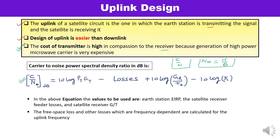The value being calculated is based on certain parameters. First is EIRP — effective isotropic radiated power. Second is the satellite receiver feeder losses and satellite G/T ratio, also known as the figure of merit. Third are the free space loss and other frequency-dependent losses, which can be calculated for the uplink frequency. Free space loss is written as (4πr/λ)².